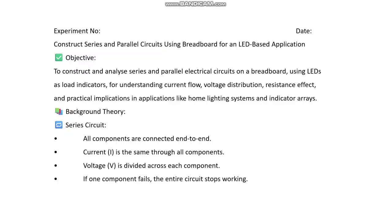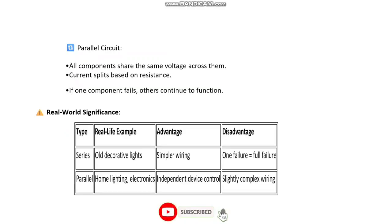In a series circuit, current is the same through all components and voltage is divided across them. The problem is if one component fails, everything will fail. In a parallel circuit, all components have the same voltage across them, whereas current is split based on resistance. If one component fails, the others continue to work — that is the advantage.